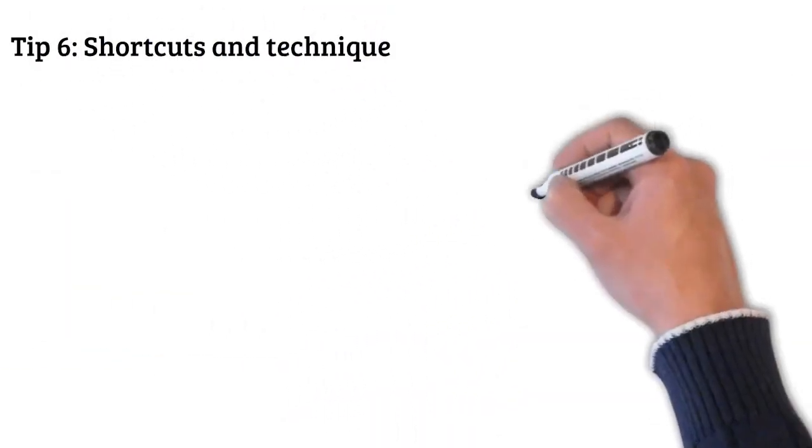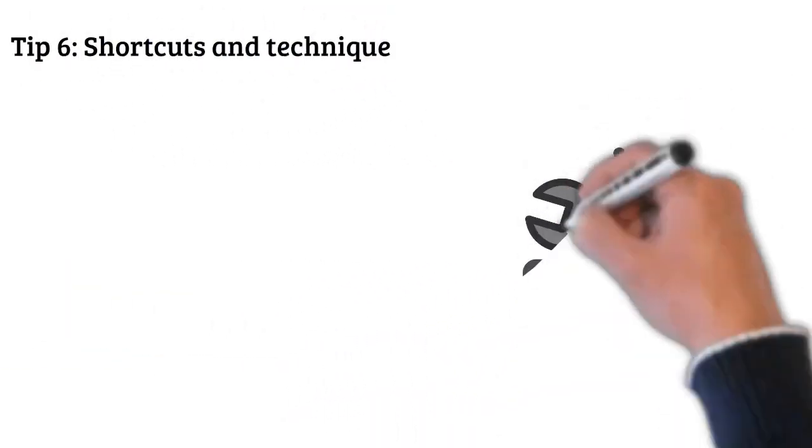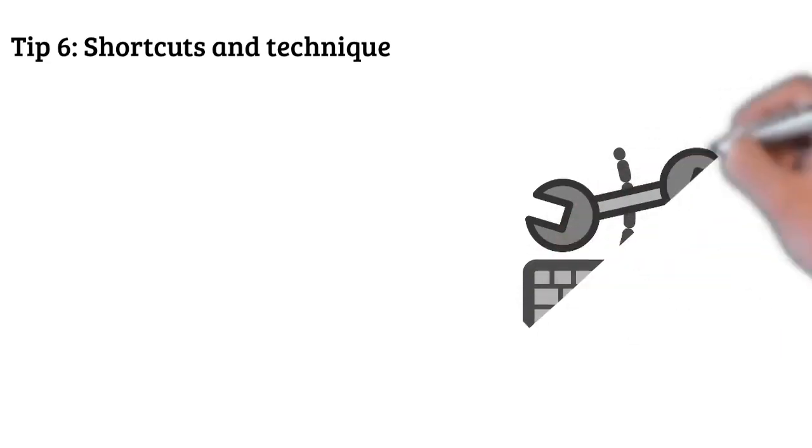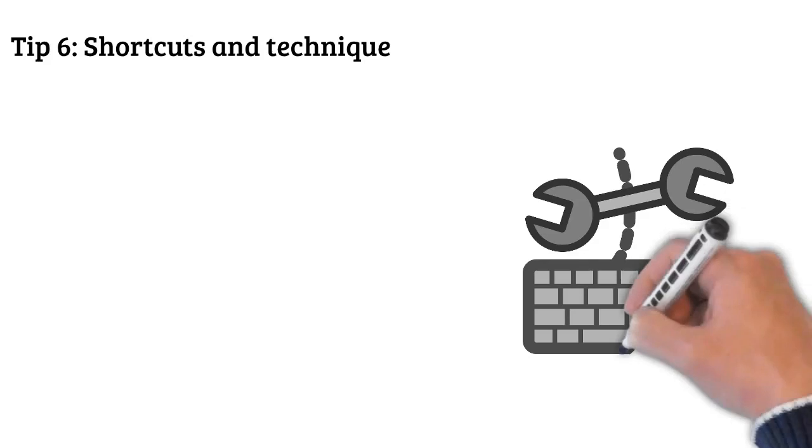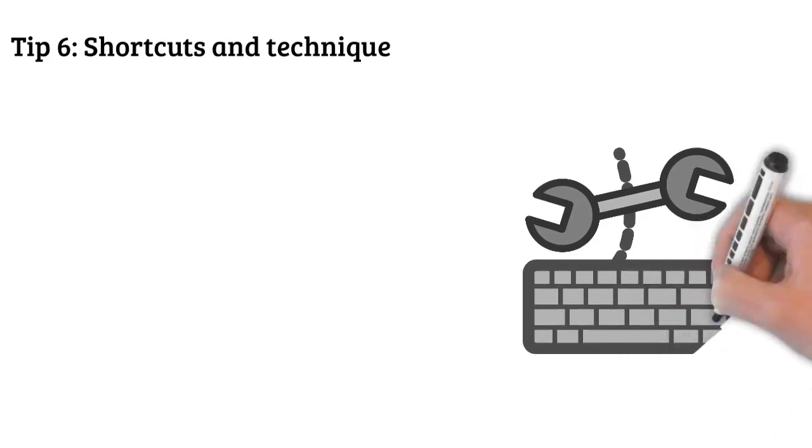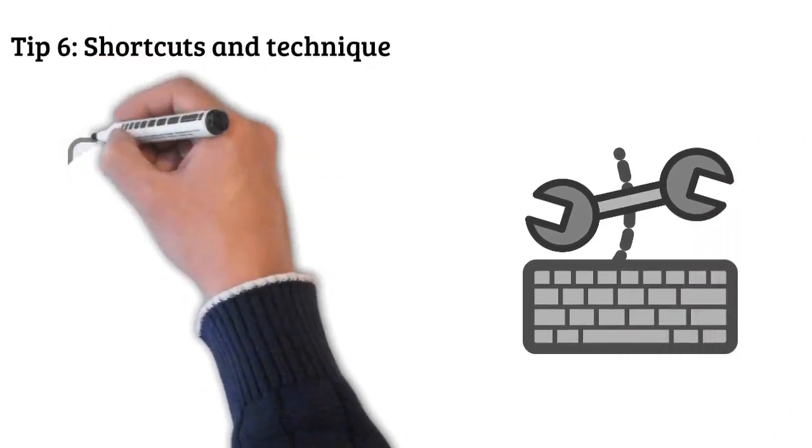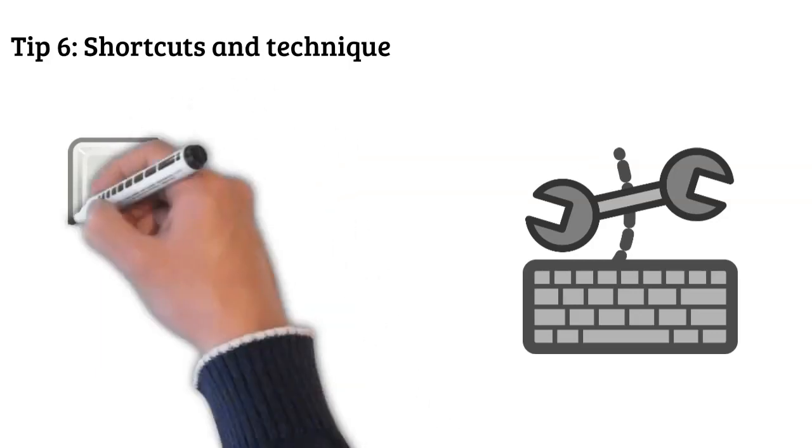Tip 6: Shortcuts and Technique. The quantitative aptitude section requires shortcut tricks for a quick answer. You can learn it by practicing, watching free online tutorials, or join some renowned coaching institute and follow their practice method.